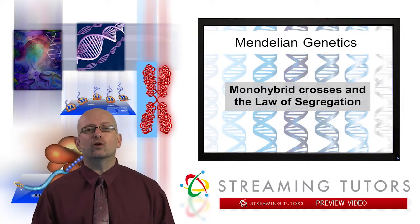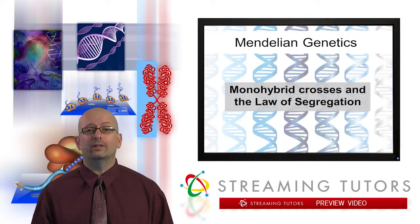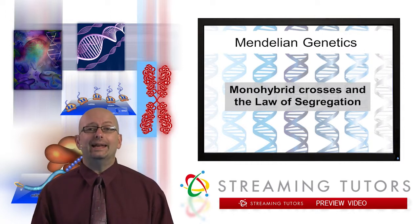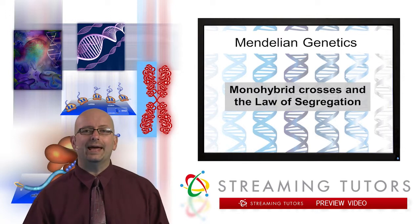Mendel is the first to get credit for actually doing experiments, keeping detailed records, and really proposing a theory about how inheritance happens. We're going to look at monohybrid crosses, and he came up with a law he called the law of segregation — sometimes called Mendel's first law today.